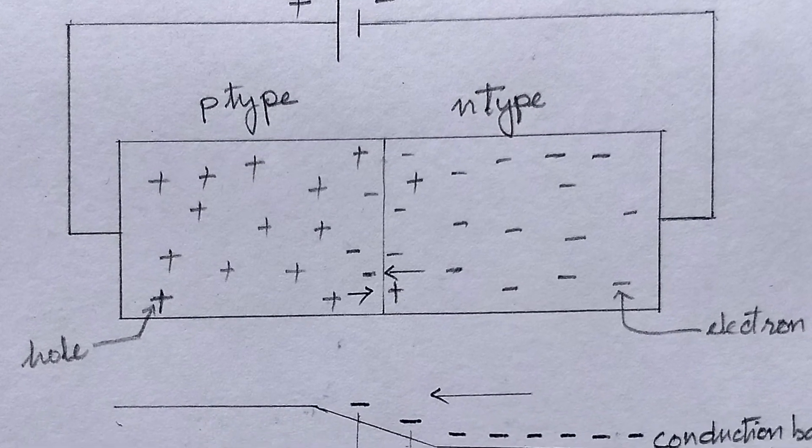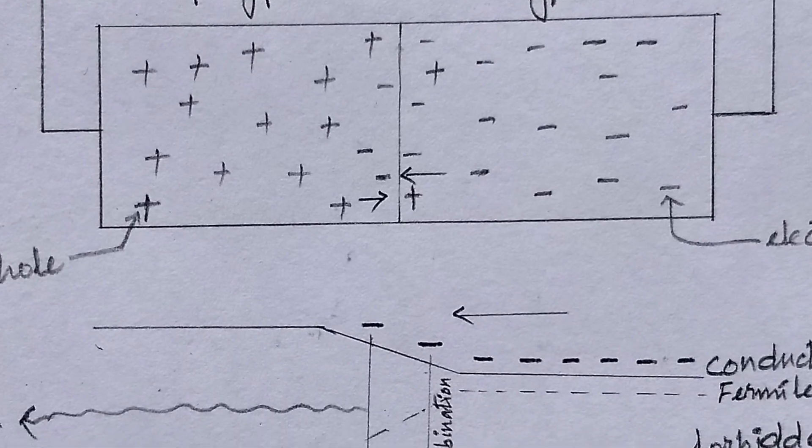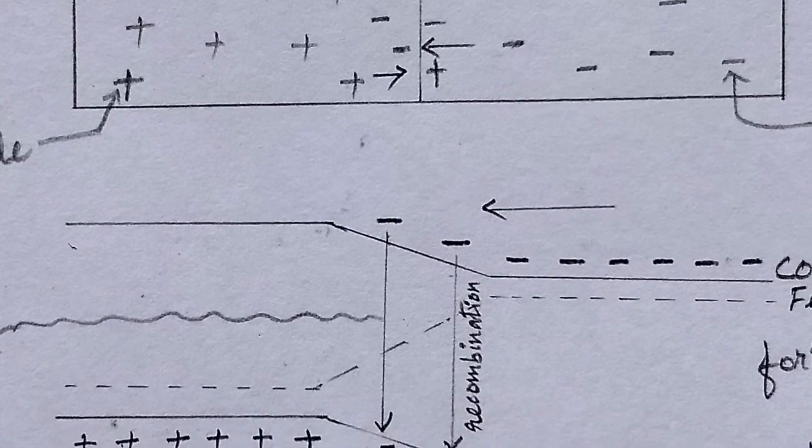Let us start with the working principle. In any forward biased PN junction, there is always an electron-hole recombination process near the junction.